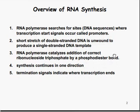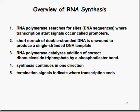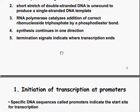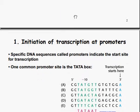A quick overview of RNA synthesis. One: RNA polymerase searches for sites or DNA sequences where transcription start signals occur, called promoters. Two: short stretches of double-stranded DNA are unwound to produce single-stranded DNA templates. Three: RNA polymerase catalyzes the addition of correct ribonucleoside triphosphates by a phosphodiester bond. Four: synthesis continues in one direction. And five is the termination — signals indicate where transcription ends.